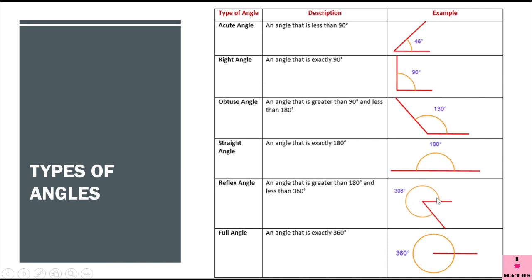This angle — this one — is a reflex angle of 308 degrees. Now full angle, we also call it complete angle. An angle that is exactly 360 degrees is called a full angle or a complete angle.